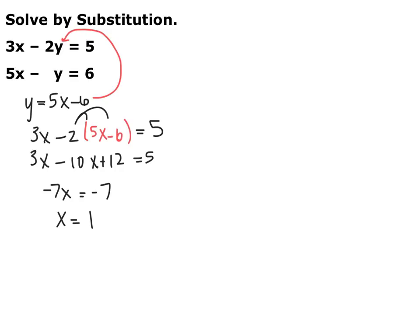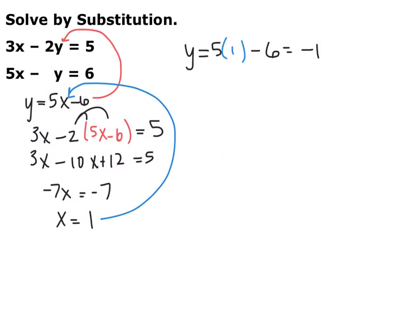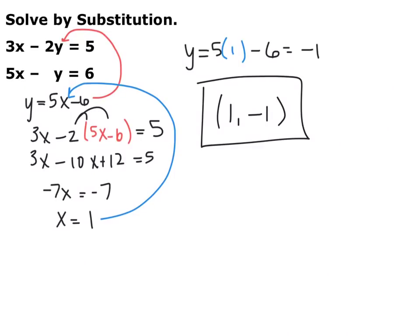So we have x now, and we need to solve for y — we're going to substitute again. You can substitute into any of these three equations. I'm going to substitute into the second one because it's already solved for y. When you plug in 1 for x, you get y equals 5 times 1 minus 6, so y equals negative 1. These are the intersection of two lines, so your answer should always be written as a coordinate point. Your final answer is (1, -1).